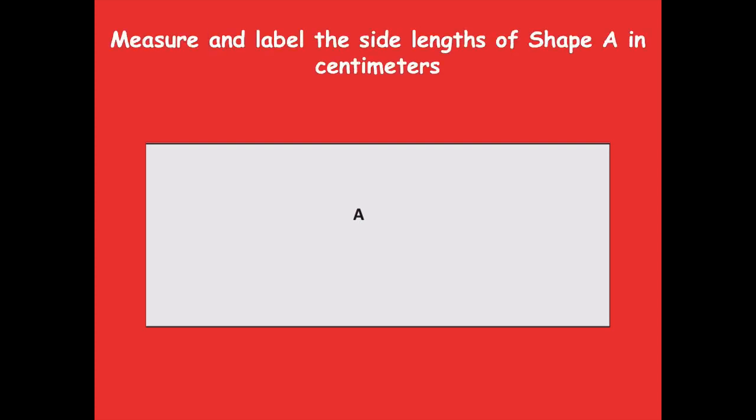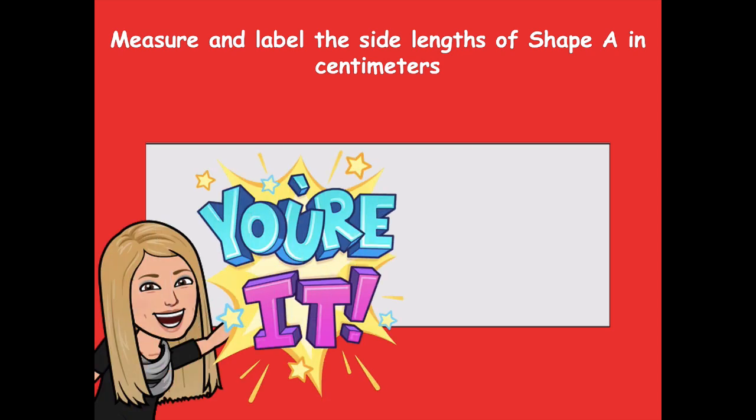Measure and label the side lengths of shape A in centimeters. Pause the video, grab your ruler, and measure all four sides in centimeters — don't use inches, centimeters. Then click play when you're ready to go over it together.